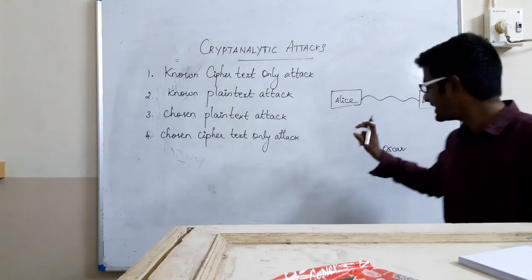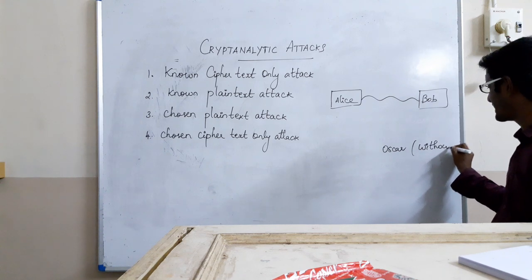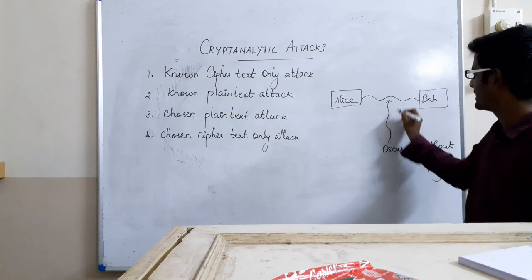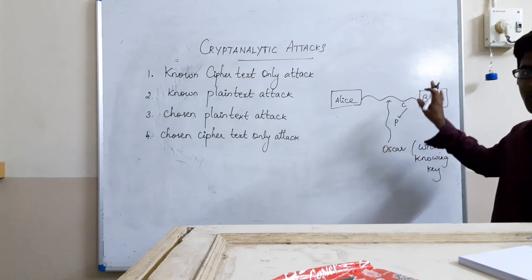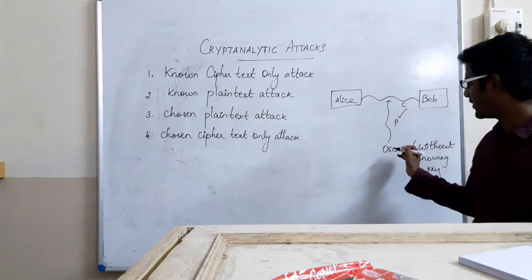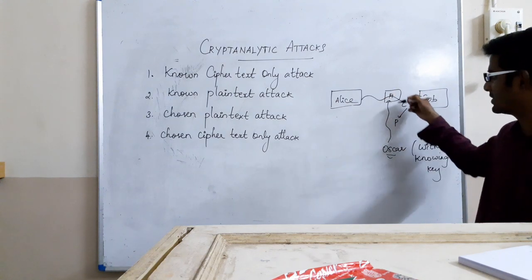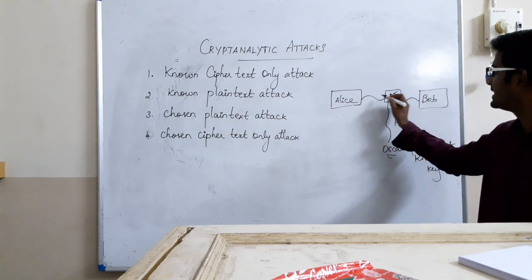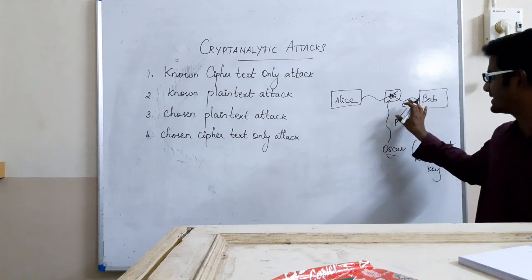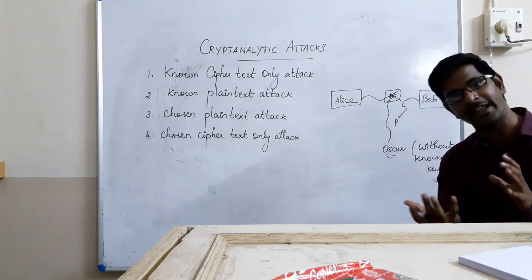In this category, the adversary wants to get the plaintext from the ciphertext without knowing the key. Oscar will not know the key, so he tries to get plaintext from the ciphertext. If Oscar is given temporary access to the encryption algorithm — say some algorithm is running, an encryption or decryption algorithm — the encryption algorithm is fed some plaintext and gives the ciphertext. Using that temporary access, he tries to get the plaintext from the ciphertext.